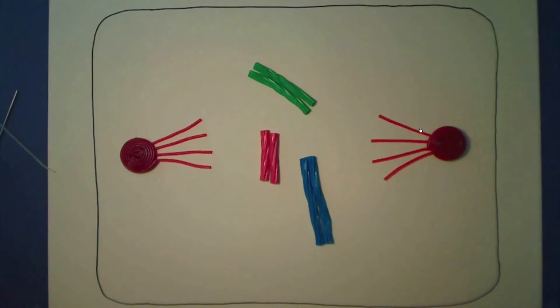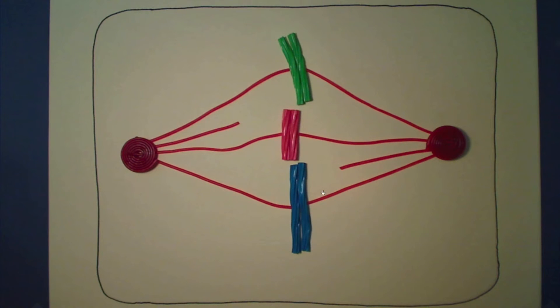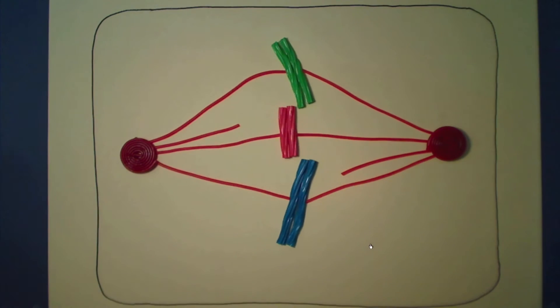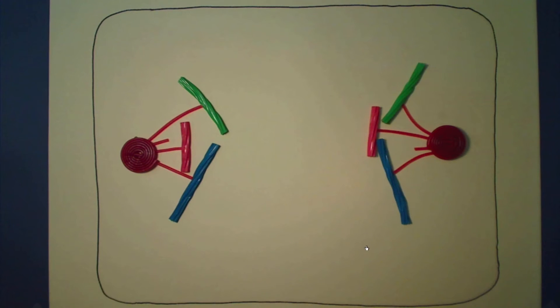So now here are the spindle fibers growing out, and you see that they've attached one from each side to one of the two sister chromatids in the cell. And they've pulled on the chromatids so that they're more or less lined up at the center of the cell. Now the spindle fibers are going to pull the chromatids apart, and if we continued the movie longer, the cell would have divided into two daughter cells, each with one complete set of chromosomes just like the parent cell.